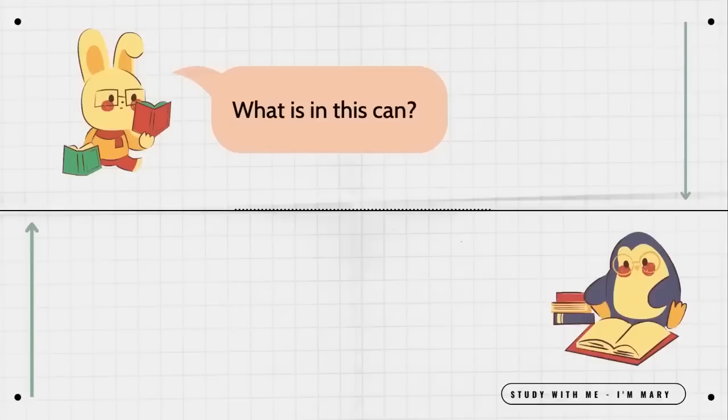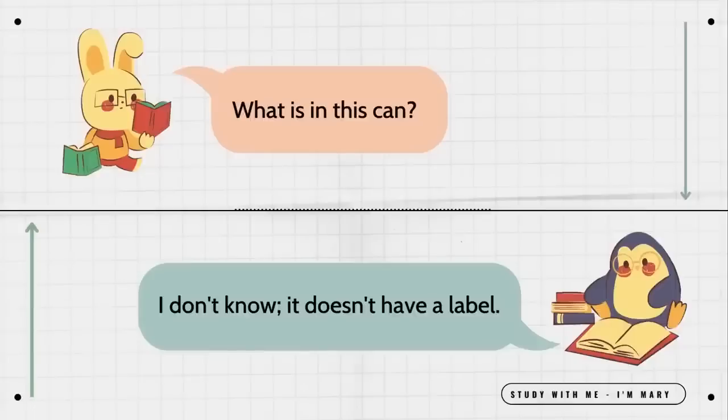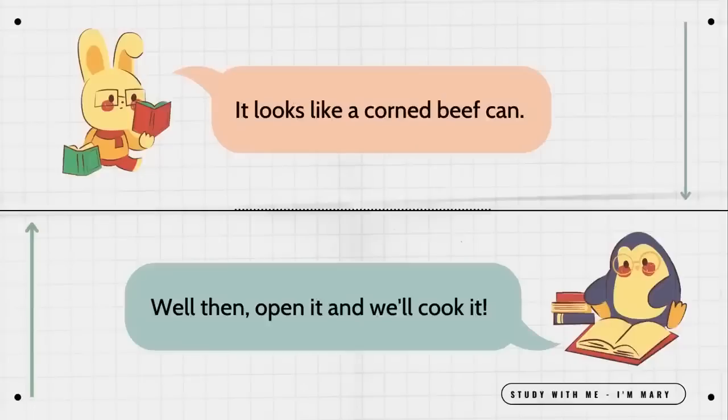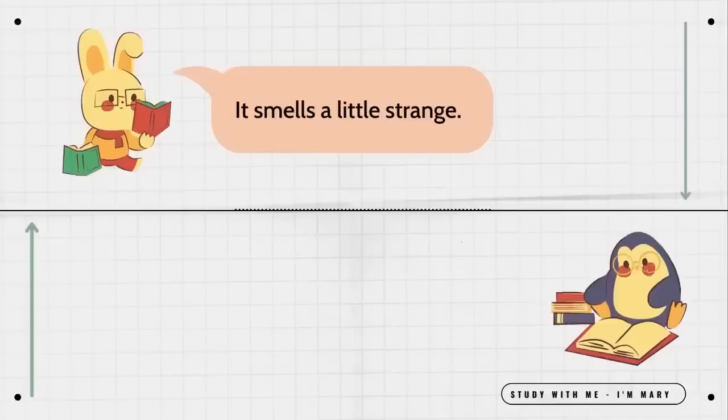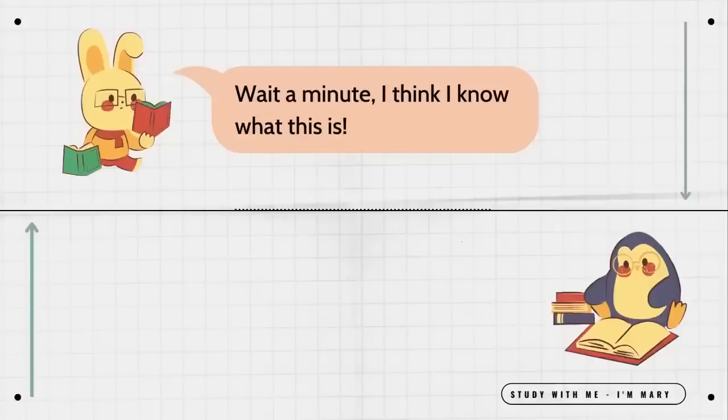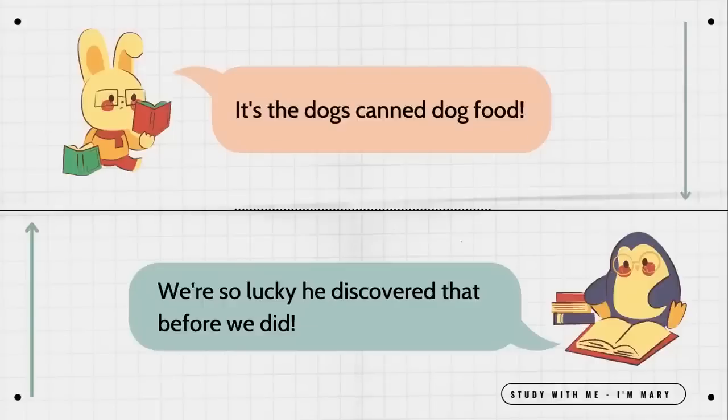What is in this can? I don't know. It doesn't have a label. It looks like a corned beef can. Well then open it and we'll cook it. It smells a little strange. Maybe it went bad. Why is the dog so excited? Dogs love meat so he can probably smell it. Wait a minute. I think I know what this is. What do you think it is? It's the dog's canned dog food. We're so lucky he discovered that before we did.